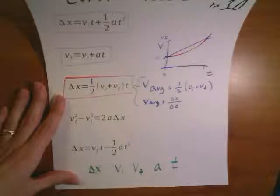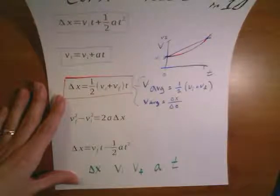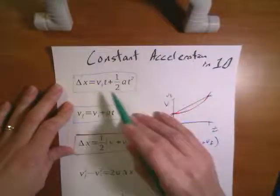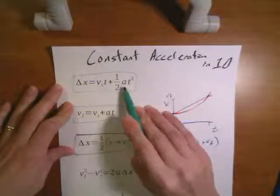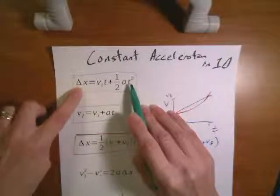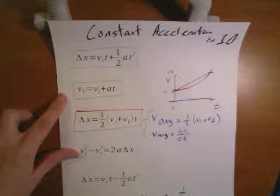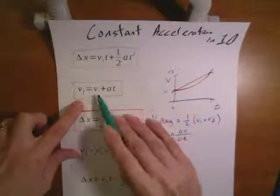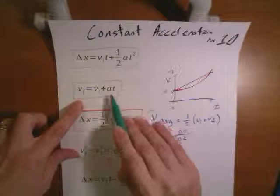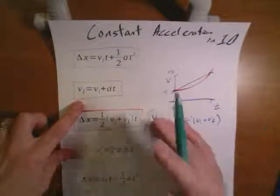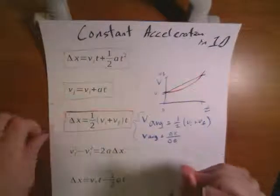Any particular one of these equations could be used, but there's always going to be a best equation. For example, if you've got the initial velocity, the acceleration, and the time, and you're looking for the position, this first equation is going to work really well — you can plug in the initial velocity, the time, the acceleration, and time squared, and find your delta x in one step. But if you had the initial velocity, the acceleration, and the time and were looking for the final velocity, you would use the equation with initial velocity, acceleration, and time to find the final velocity. Each one of these equations is best used in a particular situation.